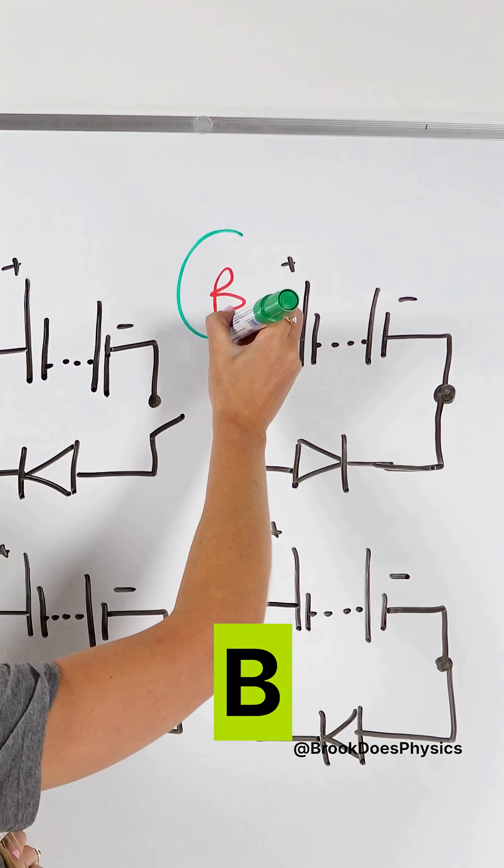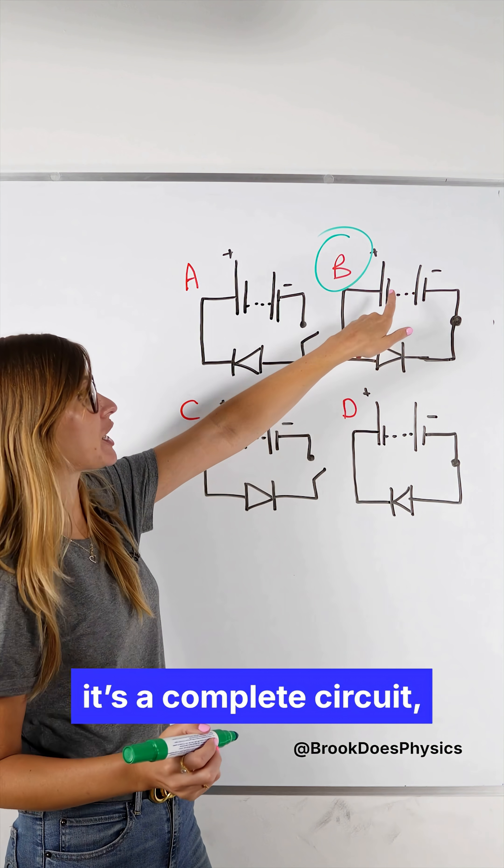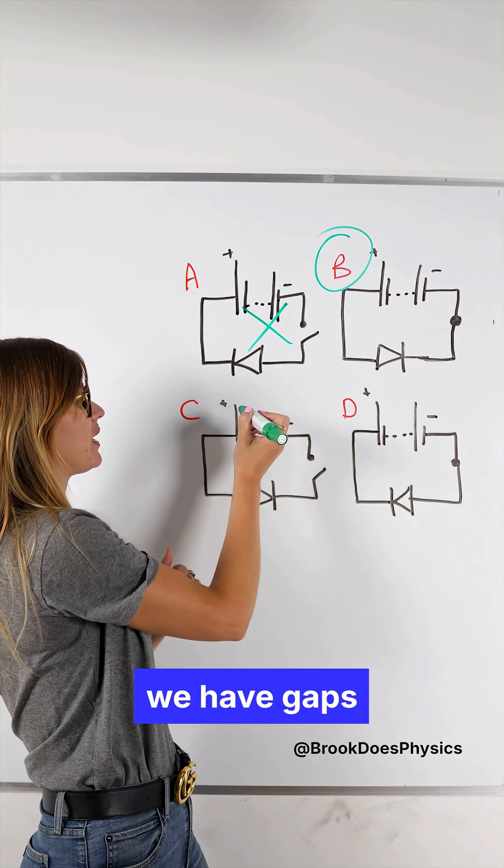The answer is B and the reason why is because number one is a complete circuit whereas here we have gaps because the switch is open.